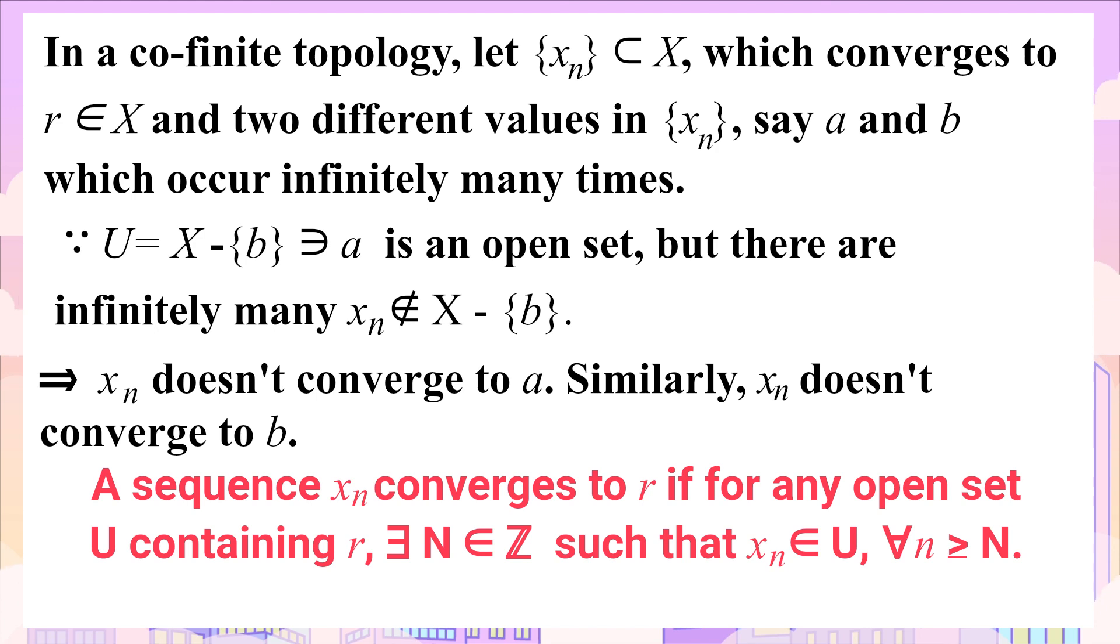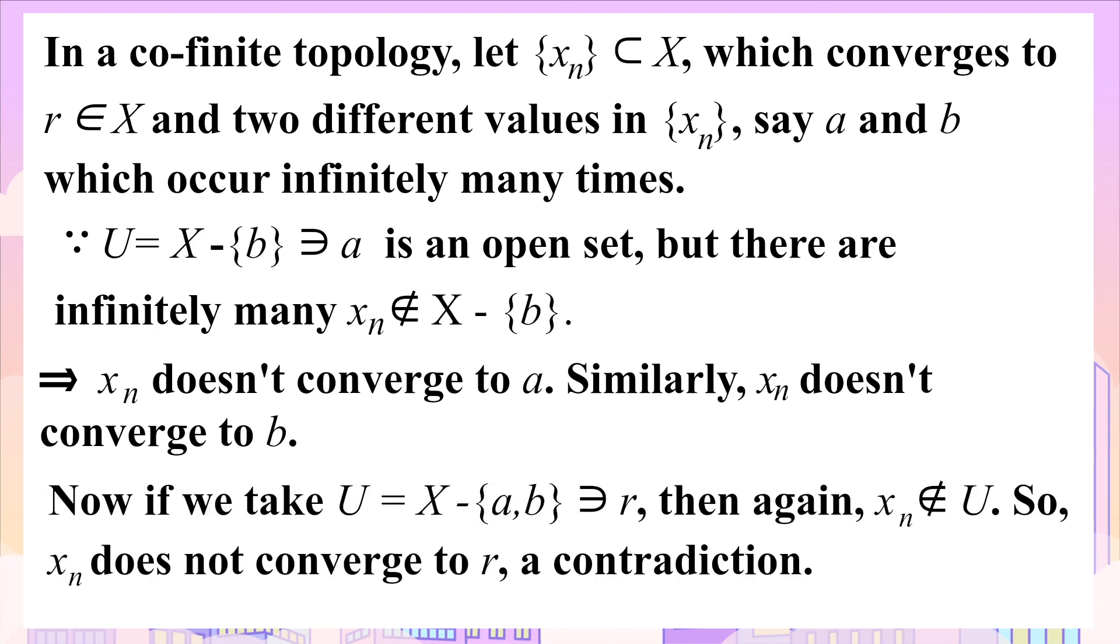So by the definition of convergence in topological sense, {xₙ} doesn't converge to a. Similarly {xₙ} doesn't converge to b as well. Now if we take the open set U as the complement of the finite set {a, b} containing r, then again xₙ is not contained in U. So {xₙ} doesn't converge to r, which is a contradiction.